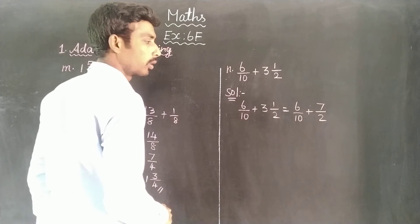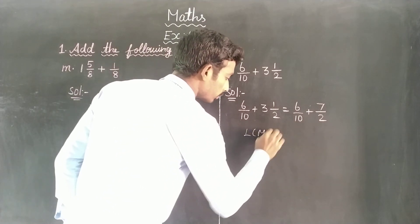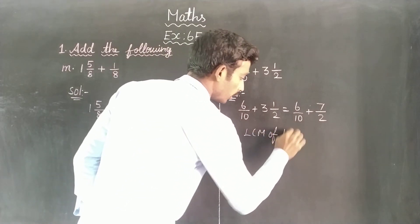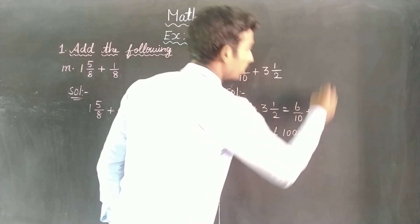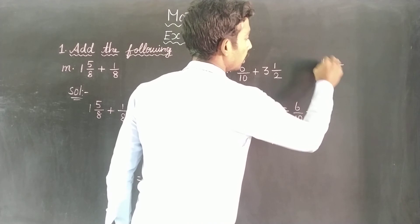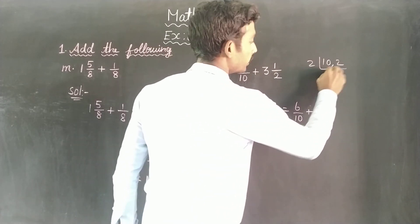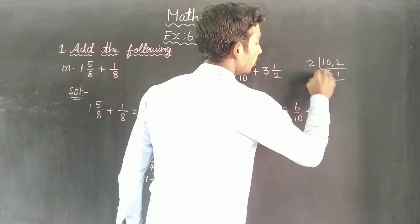Now we have to find the LCM. LCM of 10 and 2. So 10 and 2, the LCM: 2 times 5 is 10, and 2 times 1. So 2 times 5 equals 10.